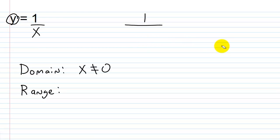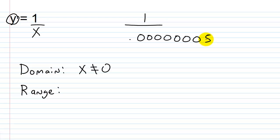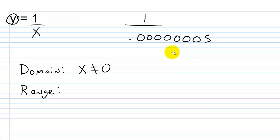What if I plug in a really small number, like 0.00000005? Y is going to get really, really big — it blows up. The smaller the number in the denominator, the bigger the result: for example, 1 divided by 0.25 gives you 4. So the extreme scenarios are covered: dividing by something very large approaches zero but never reaches it, while dividing by something very small makes Y go to infinity. Therefore the range is the set of all real numbers except for 0.